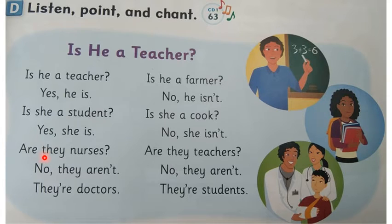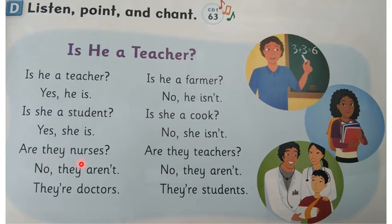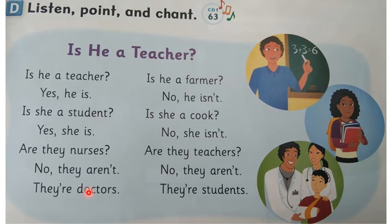This time we're going to have two people we're talking about. So instead of 'is he' or 'is she,' we're going to say 'are they?' Good. Are they nurses? We say no, they aren't. They're doctors. These two people aren't nurses, they're doctors.